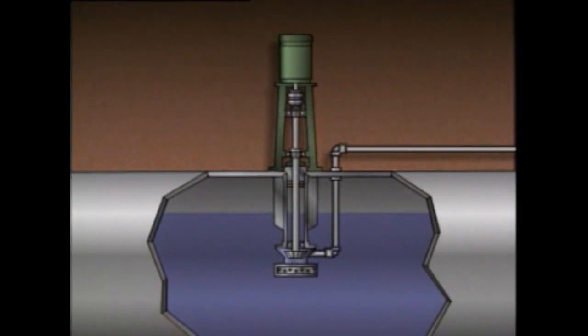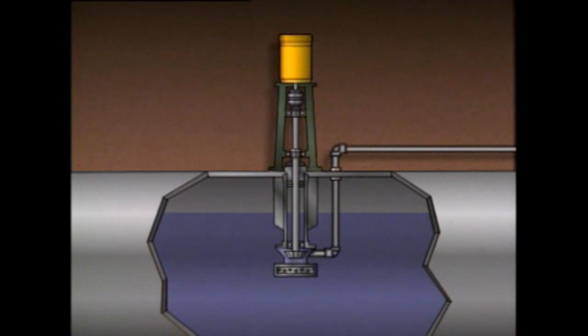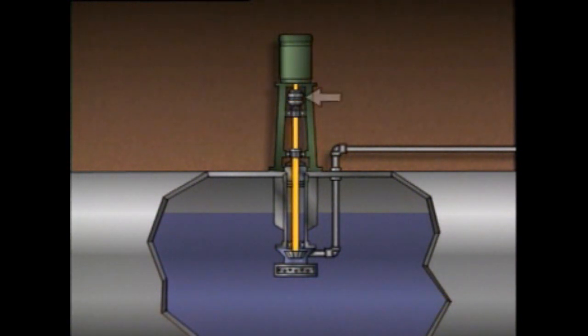In some installations, it's necessary to keep a pump's driver above the liquid while the pump is submerged. One type of centrifugal pump found in these applications is a vertically mounted centrifugal pump. The pump itself is submerged in a tank containing the liquid being pumped. The driver, which is an electric motor, is mounted above the pump on top of the tank.